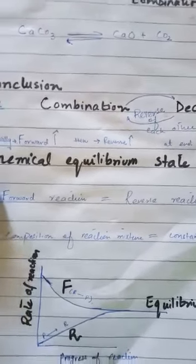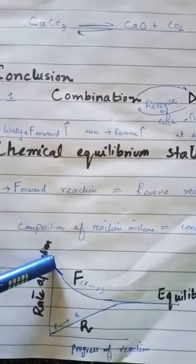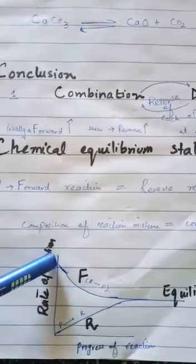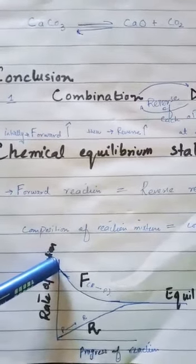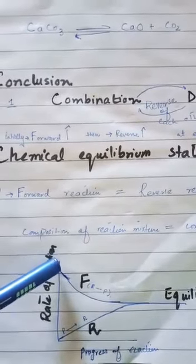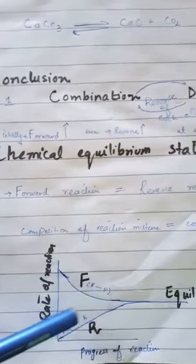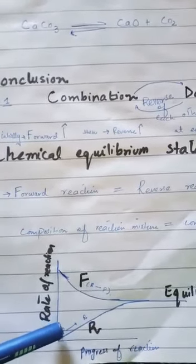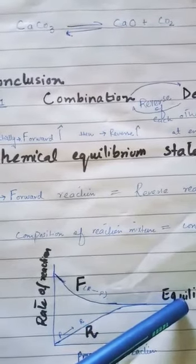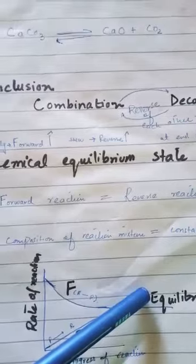If we explain this graphically, we can see that the forward reaction starts at a high rate while the reverse reaction starts at a low rate, because initially reactants are present in greater quantity. As time progresses, the forward reaction rate decreases and the reverse reaction rate increases as products form. Eventually both rates become equal — that is the chemical equilibrium state. As an activity, students have to find three equations of reversible reactions other than those in the textbook. We will study the remaining portion of this topic in the next lecture.